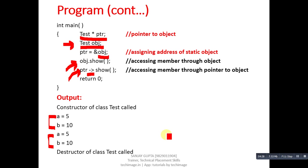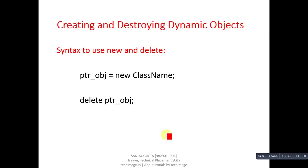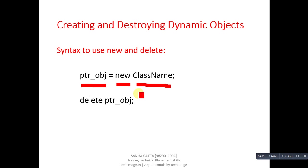Now I am showing how to create and destroy dynamic objects using new and delete. For dynamic object creation: pointer = new ClassName. To destroy the dynamically created object, use delete ptr.